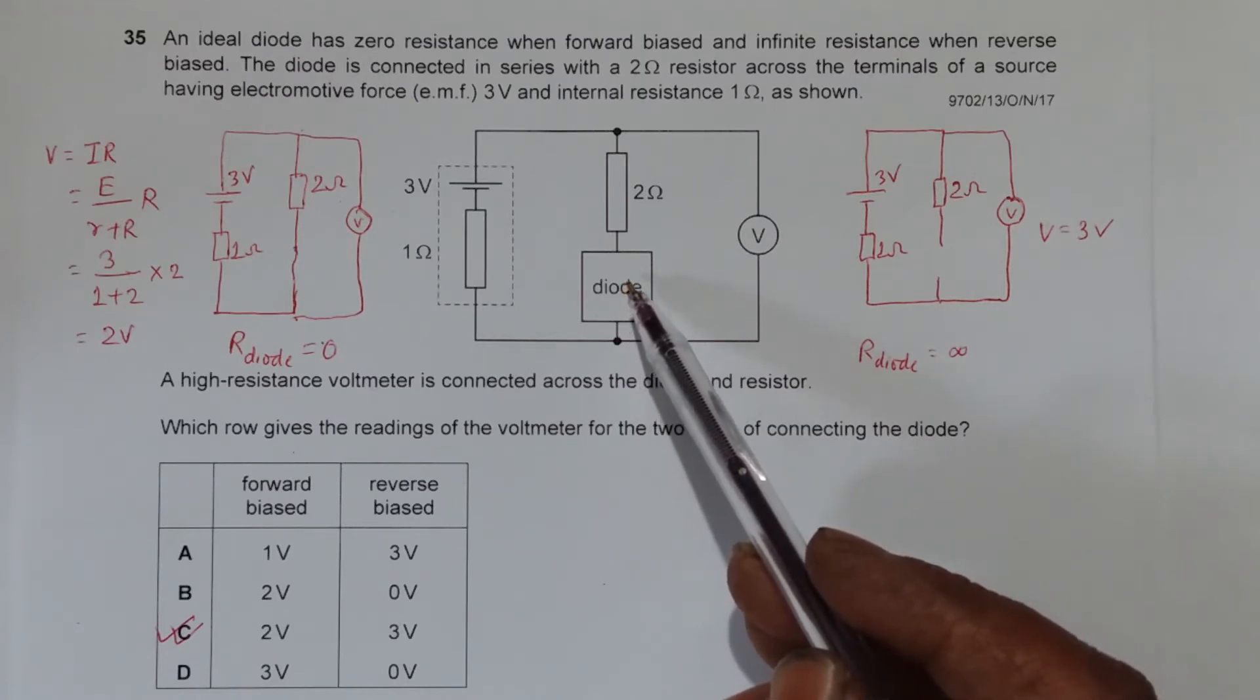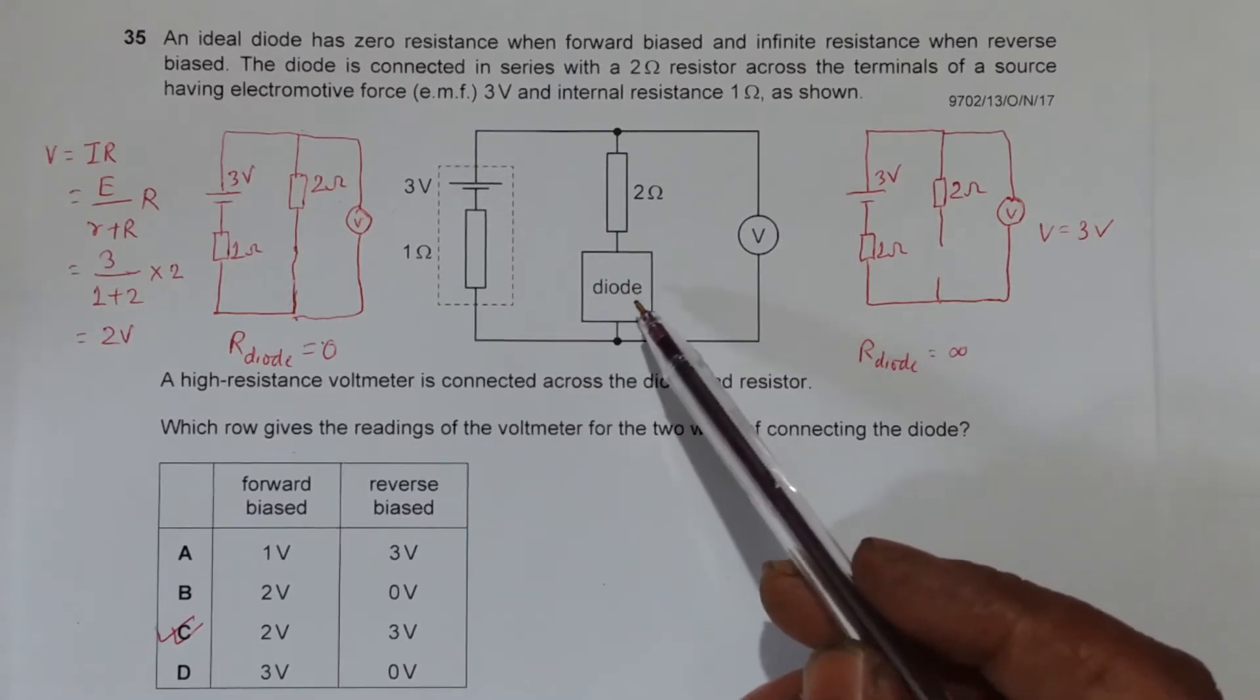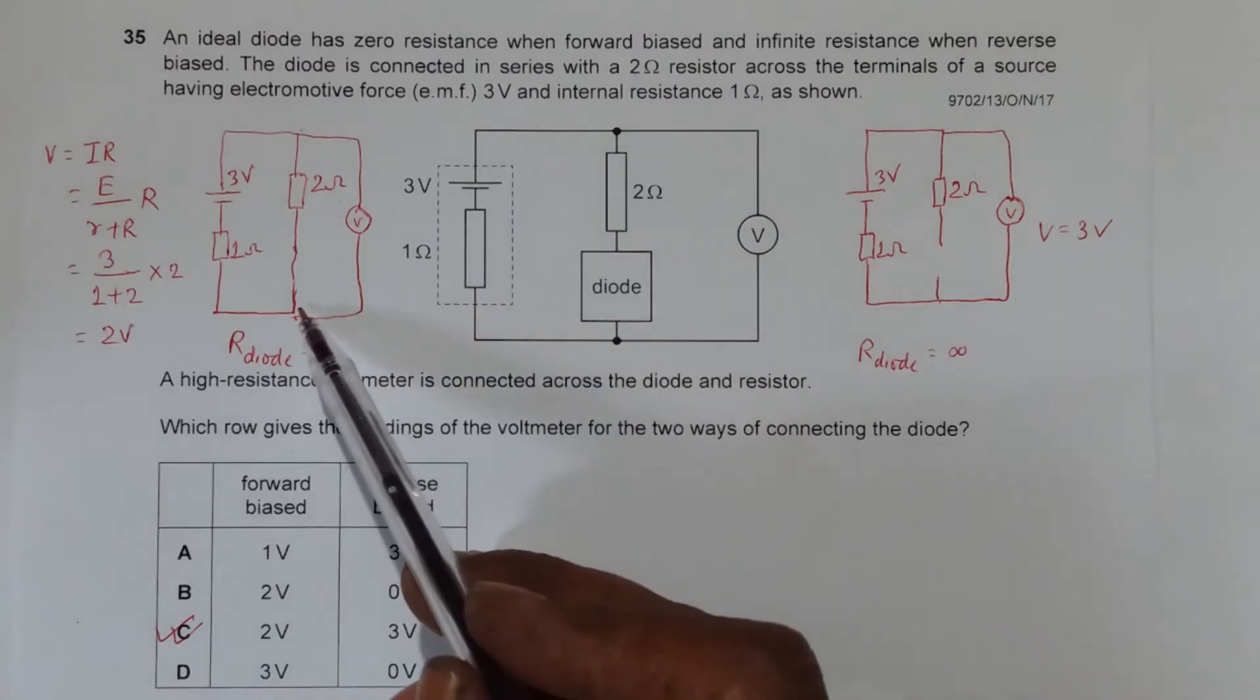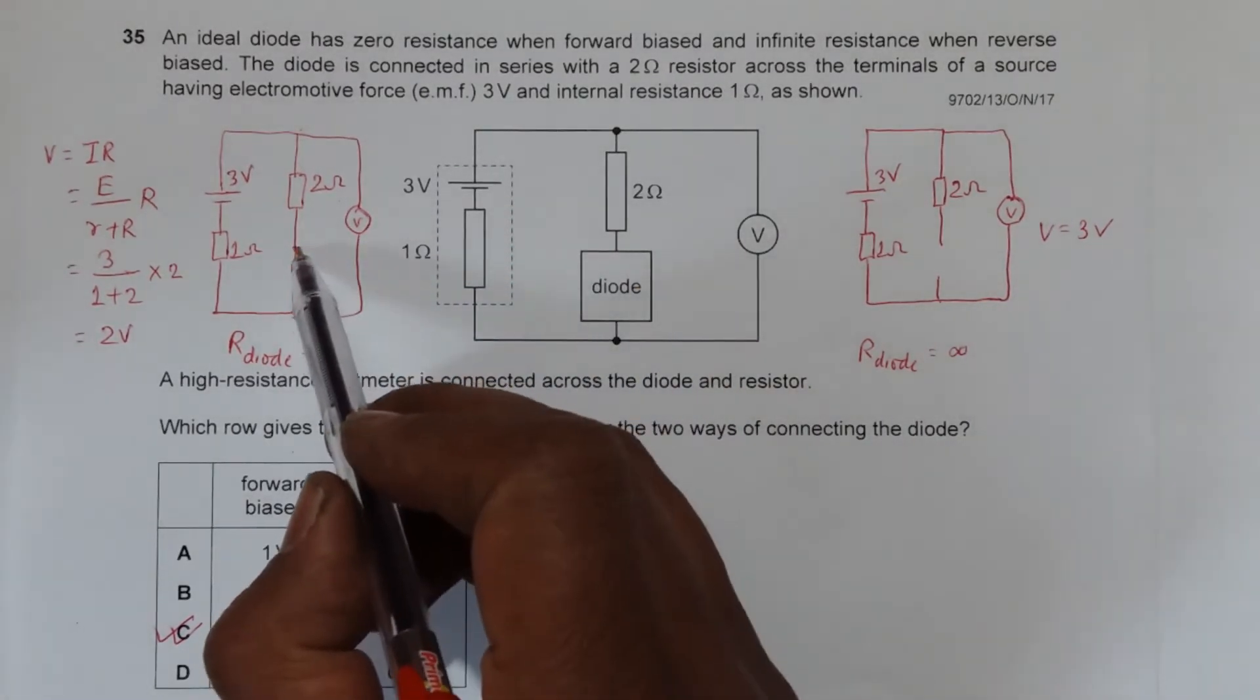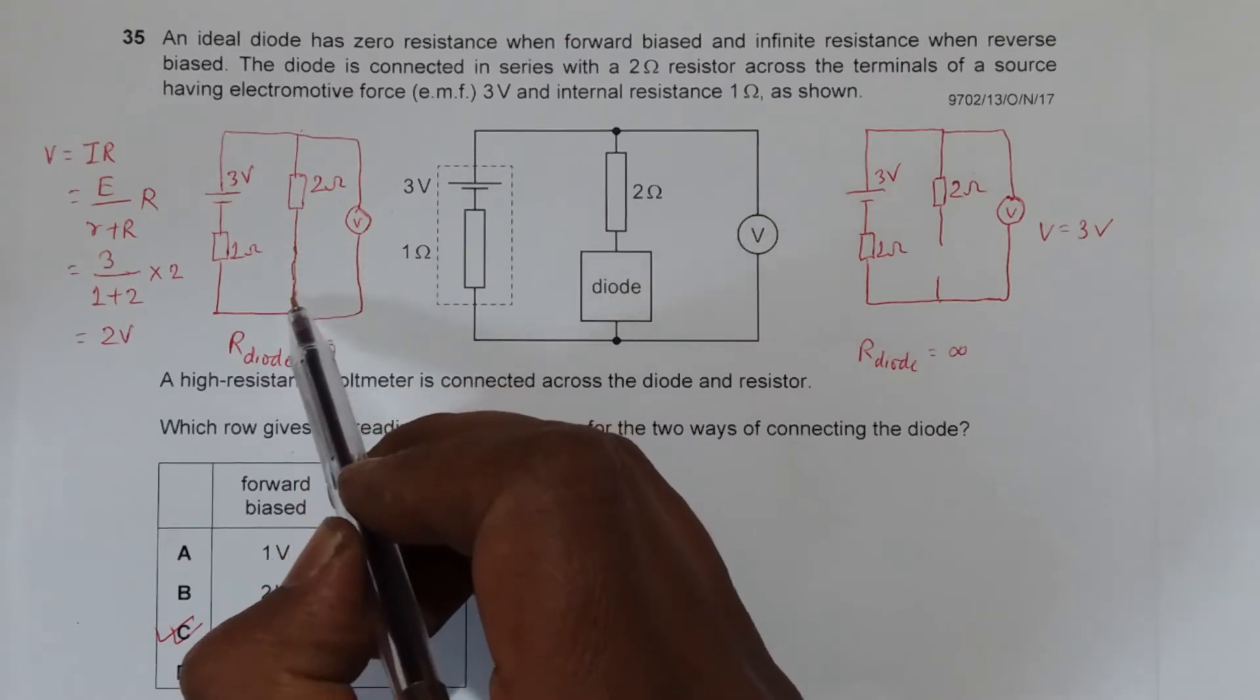And when it is at infinite resistance, which means reverse biased. When it has zero resistance, the circuit will be like this. So instead of a diode, I have simply used a wire here because the resistance is zero.